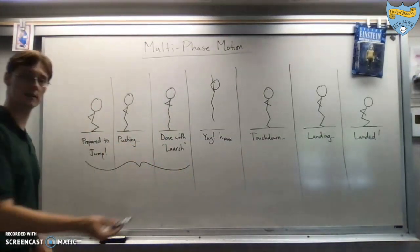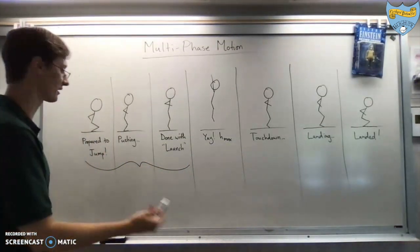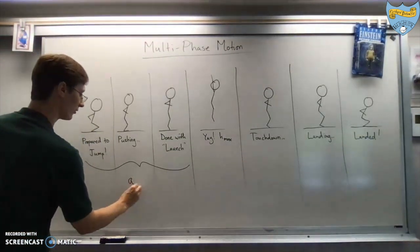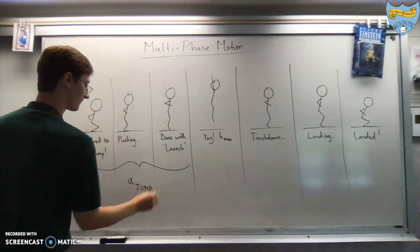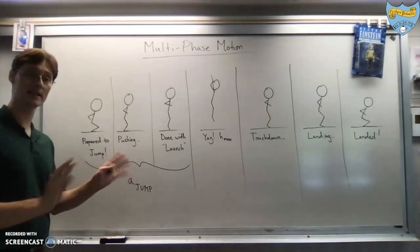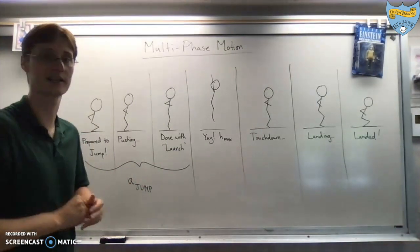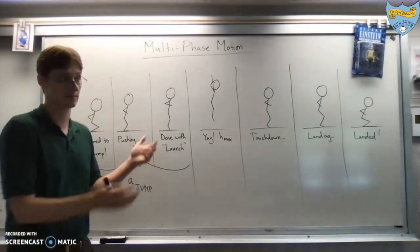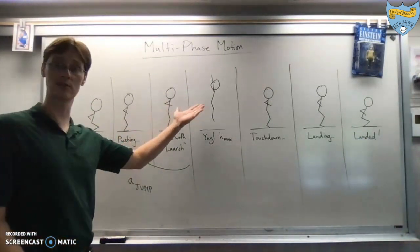This right here has one value or at least a function for your acceleration. So this right here, this acceleration would be the, let's call it the jump acceleration. I have no idea what it is. It could be 15 or something like that, but whatever it is, it's upwards and whatever. It's some number that is enough to make you do this.